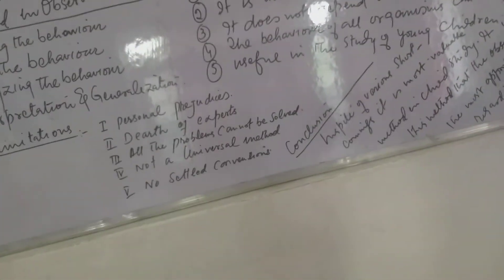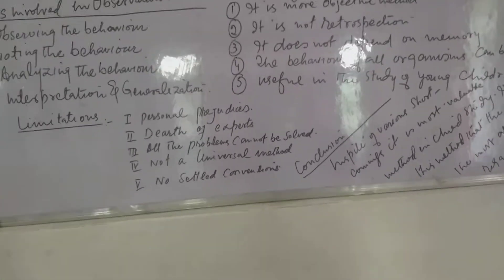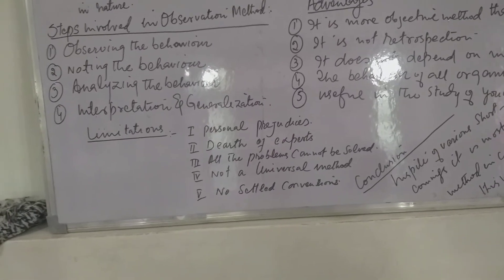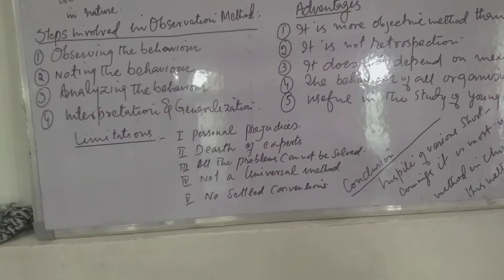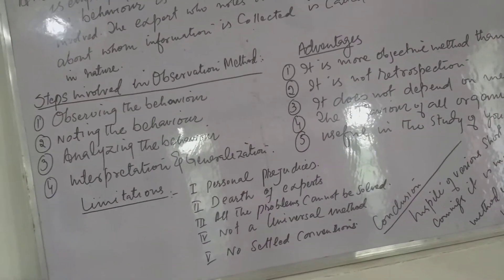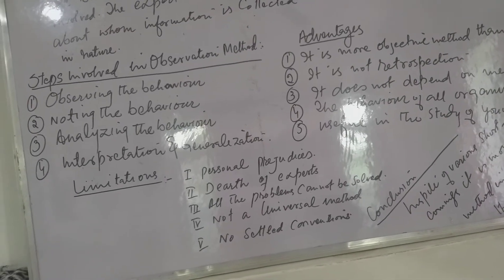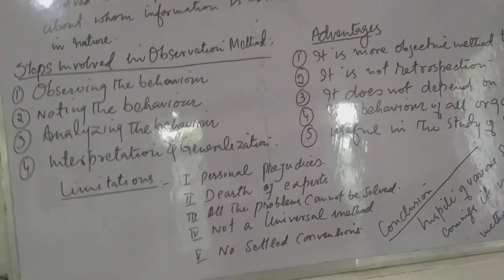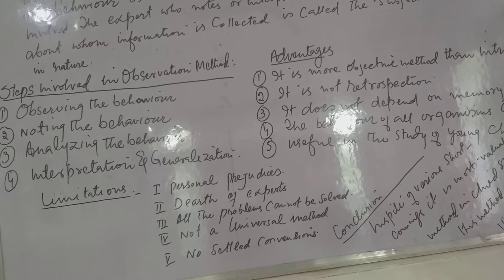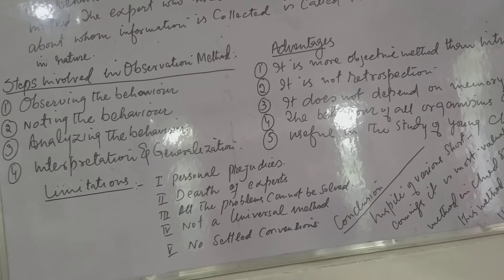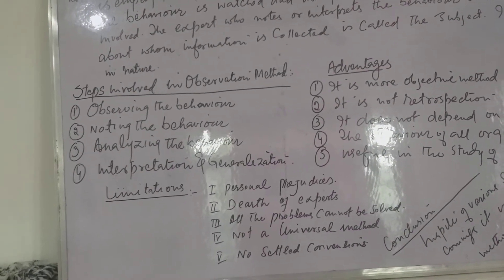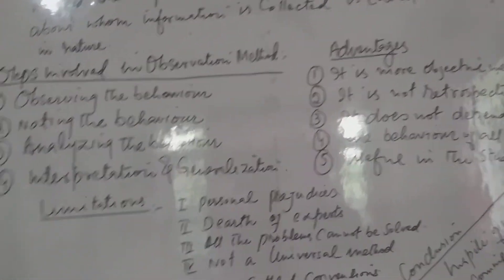Number two: noting the behavior. In the second step, the observer notes down the behavior pattern side by side during a given period of time. Number three: analyzing the behavior. In the third step, the observer tries to analyze the behavior in a systematic way. And number four: interpretation and generalization. Lastly, after a scientific analysis of the data, the observer tries to interpret the data, and it is possible for him to generalize the situation.